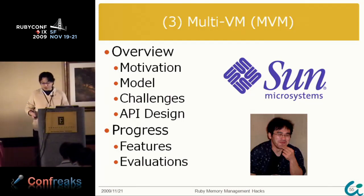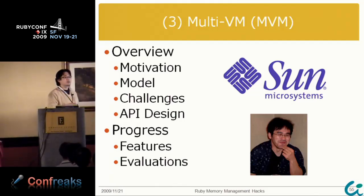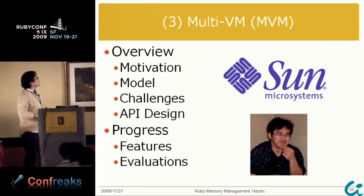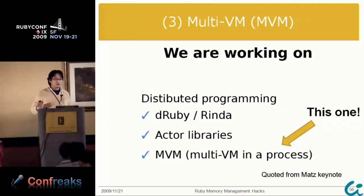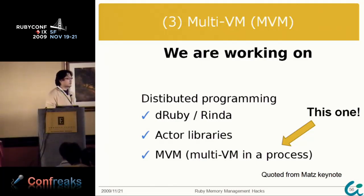At last, I want to talk about the multi-virtual machine progress. This research is sponsored by Sun Microsystems. Nakada-san, also known as Nobu, the Apache Monster and most famous Ruby committer except Matsumoto-san, helped our project. I want to talk about multi-virtual machine overview and progress. This is also quoted from Matsumoto-san's keynote, where he wrote that we are working on multi-virtual machine.